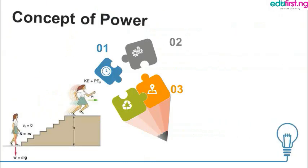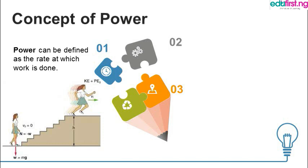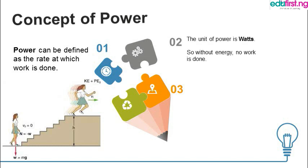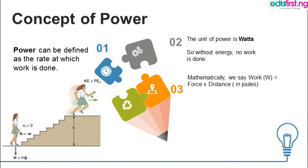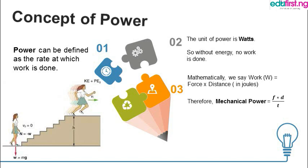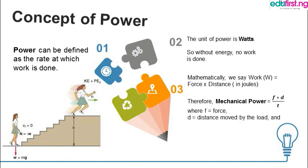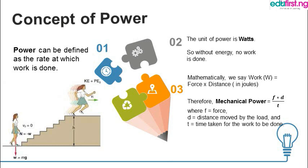Now, the concept of power. In physics, power can be defined as the rate at which work is done. Once you see 'rate,' know that time is involved. So power is simply work over time. The unit of power is watts. Without energy, no work is done. Mathematically, work equals force times distance, and therefore power equals force times distance over time, where F is force, d is the distance moved, and t is the time taken.